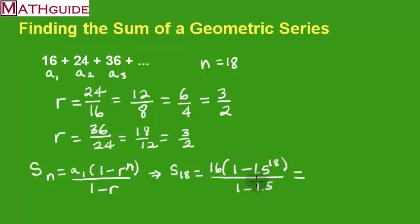you might want to calculate the numerator, get an answer, and then divide it by negative a half. 1 minus 1.5 would be negative a half. So calculate the numerator, divide it by negative 0.5.